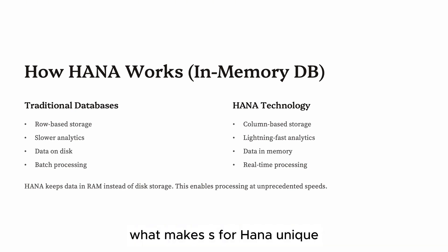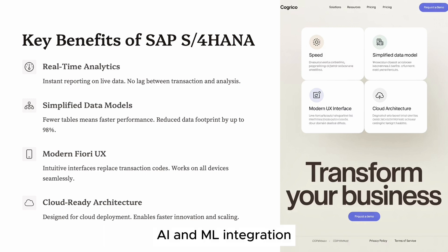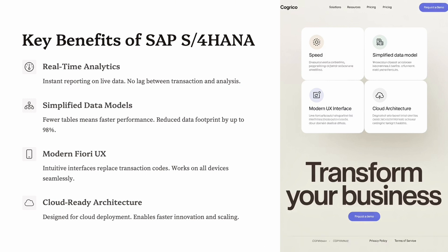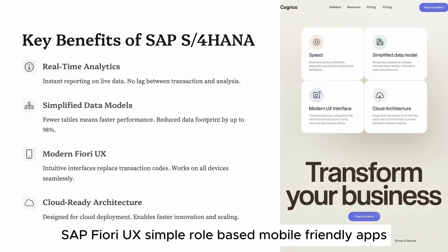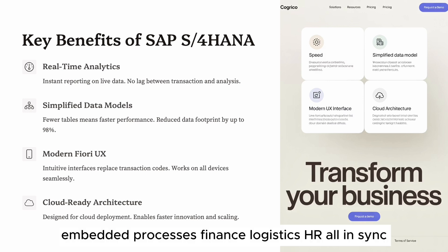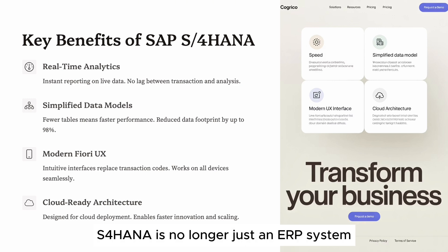What makes S/4 HANA unique? Key differentiators include: real-time analytics — no need for separate BI systems; AI and ML integration with built-in support for intelligent automation; SAP Fiori UX providing simple, role-based, mobile-friendly apps; embedded processes with finance, logistics, and HR all in sync; and cloud flexibility to deploy anywhere — public, private, or hybrid. S/4 HANA is no longer just an ERP system. It's a business transformation platform.